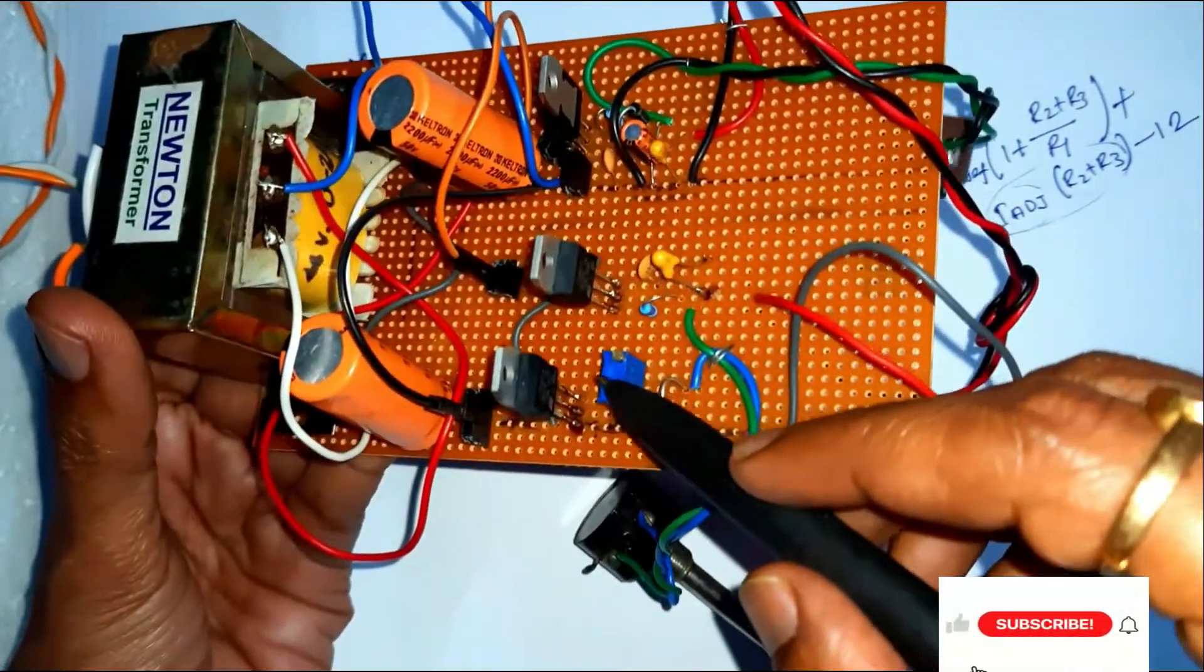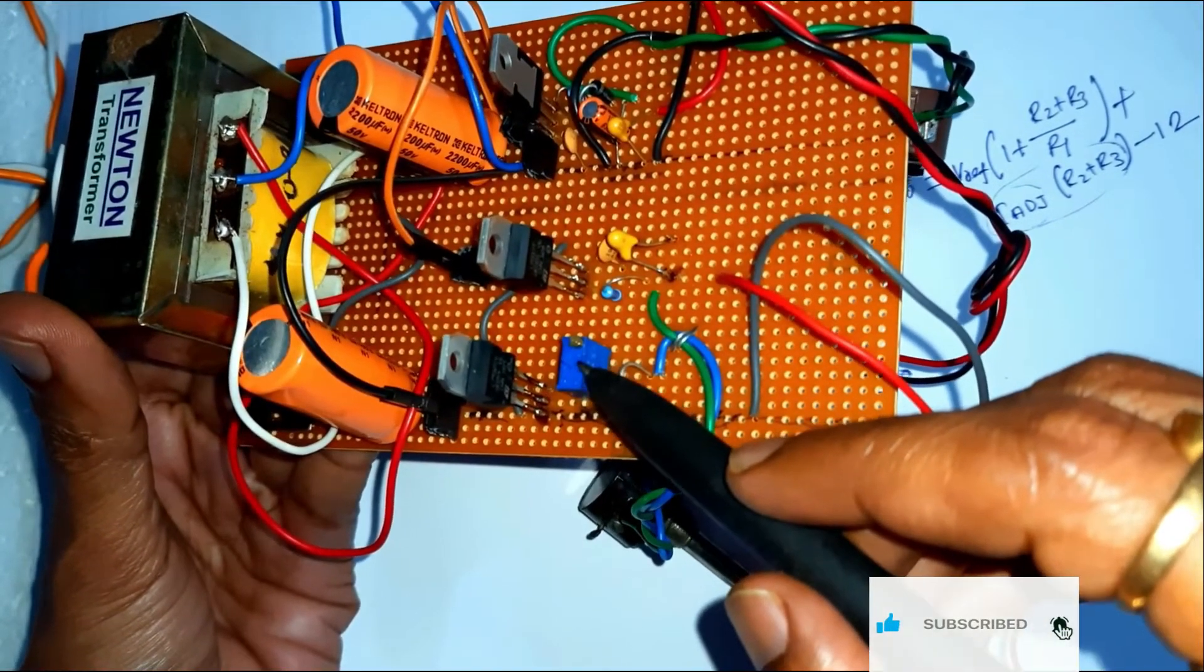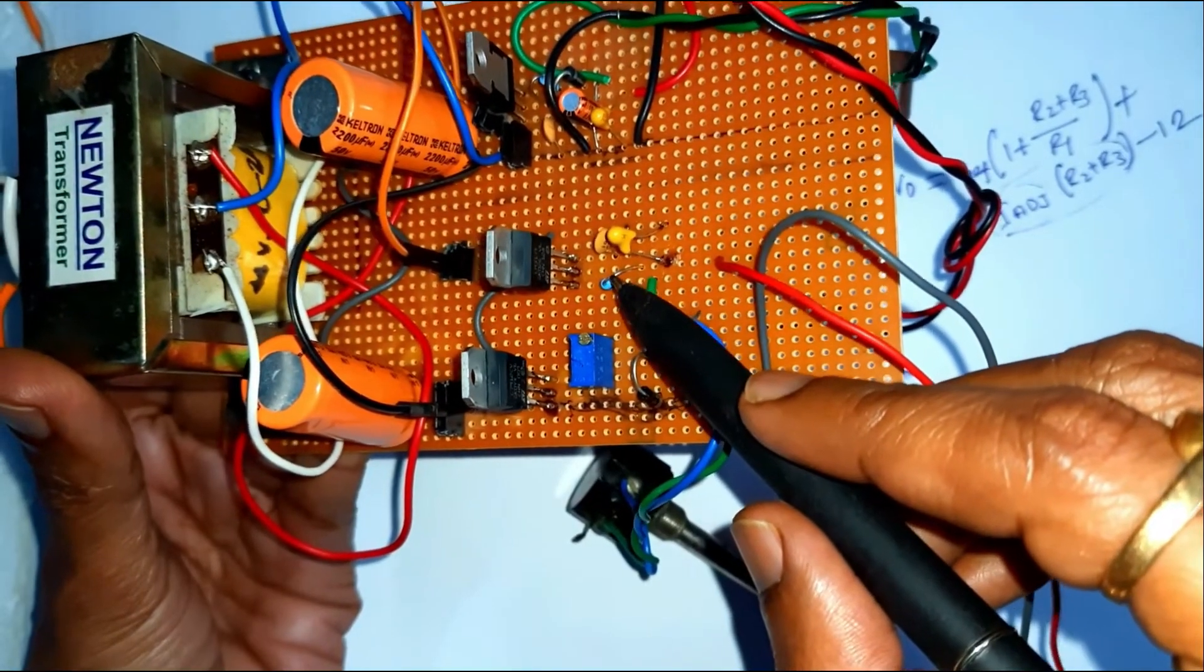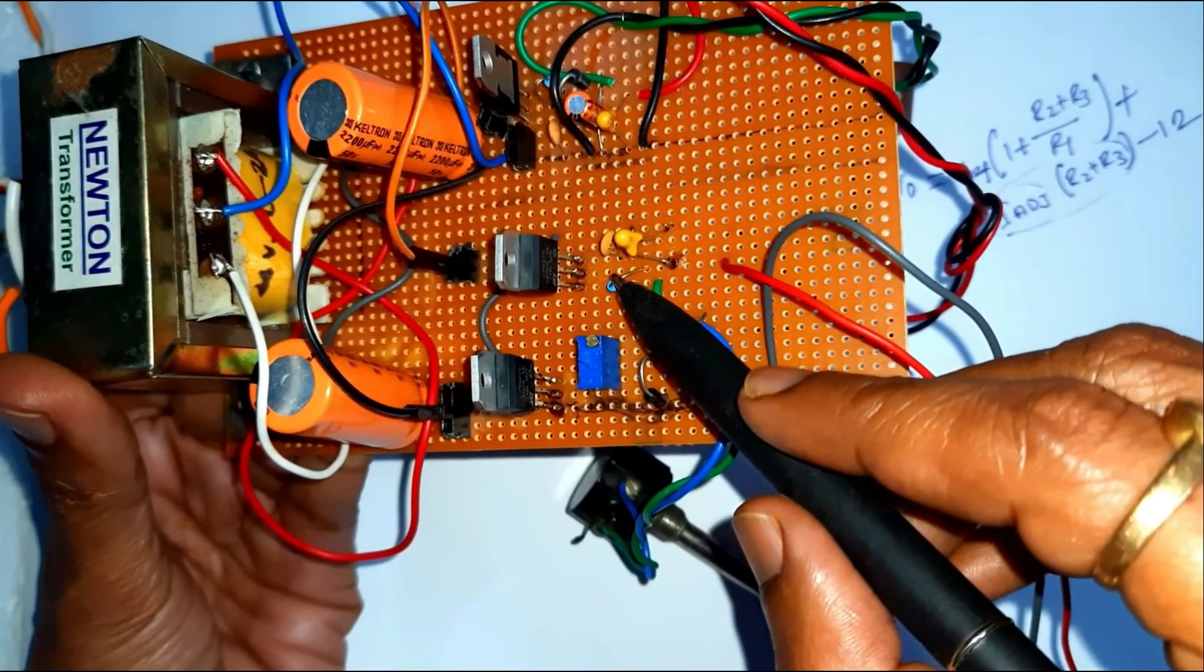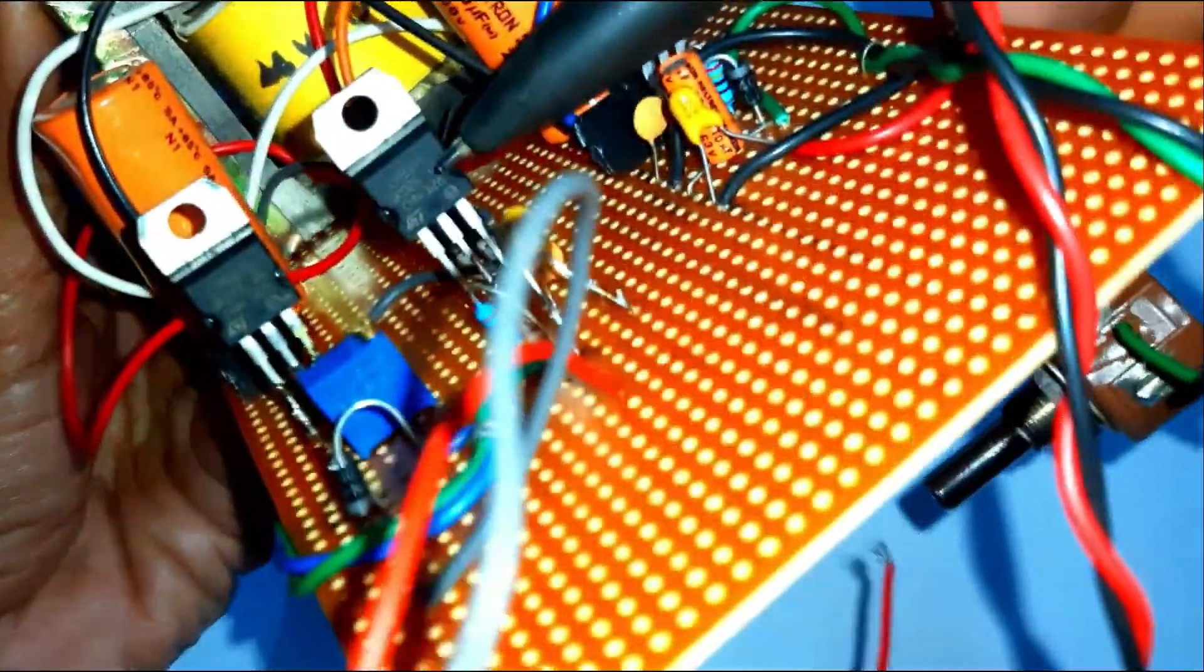And this is the R3, 5K variable pot, variable resistance and this is the R1, 120 ohm and this is the LM317 IC.